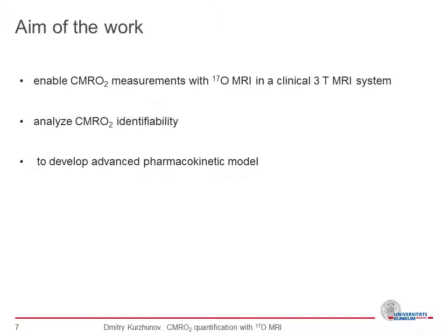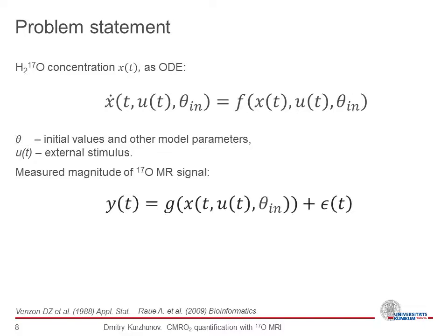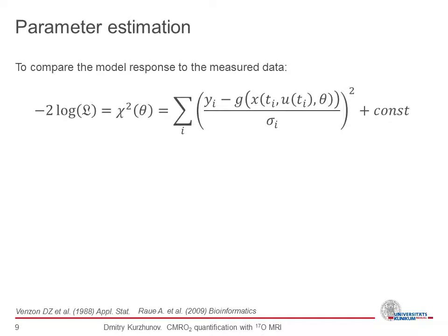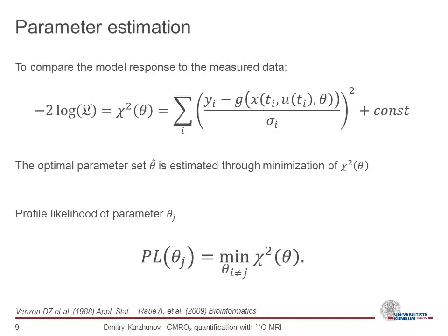For the problem statement: the H2-17O concentration can be represented as an ordinary differential equation depending on initial values, model parameters, and external stimulus. The measured magnitude of the 17-O MRI signal depends on this H2-17O concentration, with Gaussian noise on top. To compare the model response to the measured data, a chi-squared can be calculated, and the optimal parameter set is established through minimization of the chi-squared. The profile likelihood of a particular parameter is the minimization of chi-squared over all other parameters.